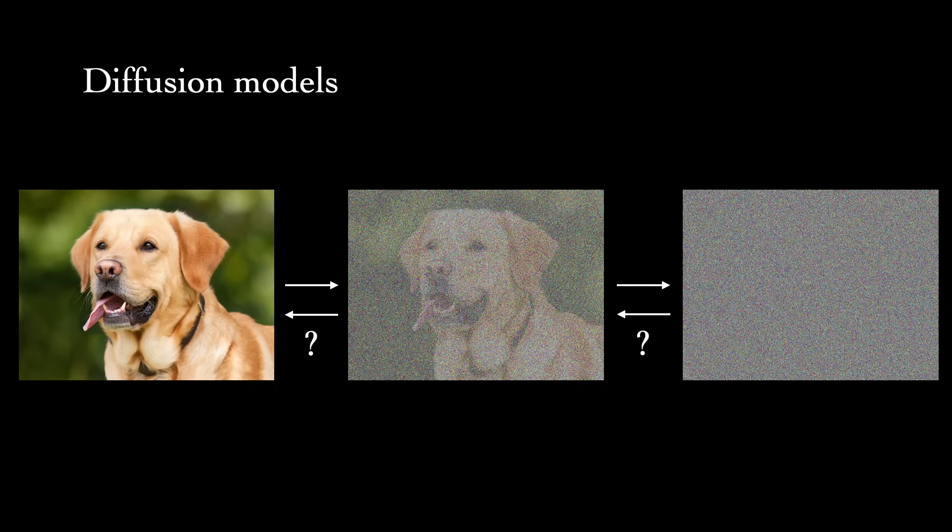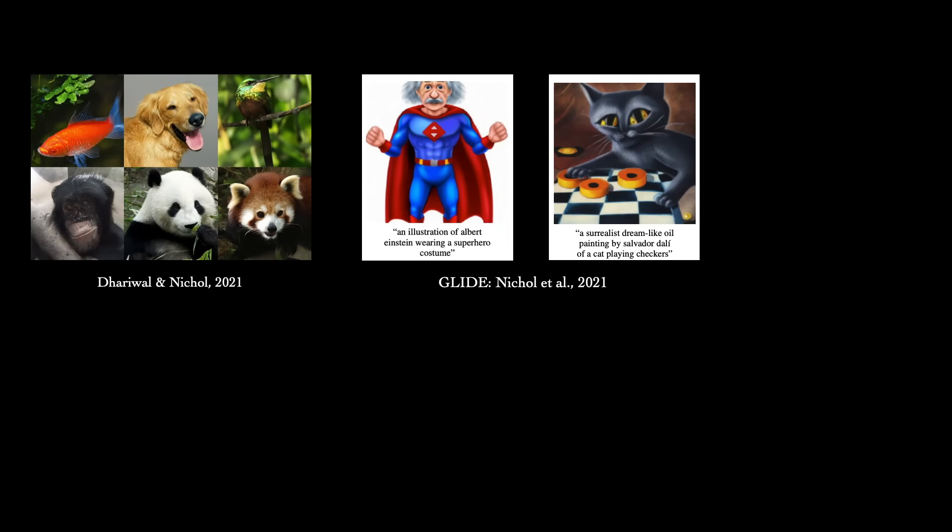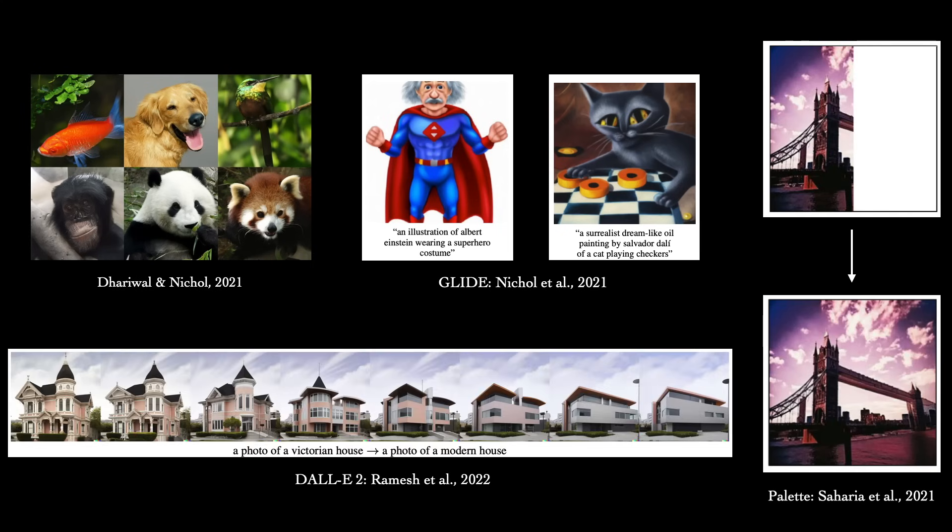For example, recent diffusion models have outperformed generative adversarial networks, known as GANs, in perceptual quality metrics. And they've also shown impressive performance in various conditional settings, such as converting text descriptions to images, in-painting, and manipulation.